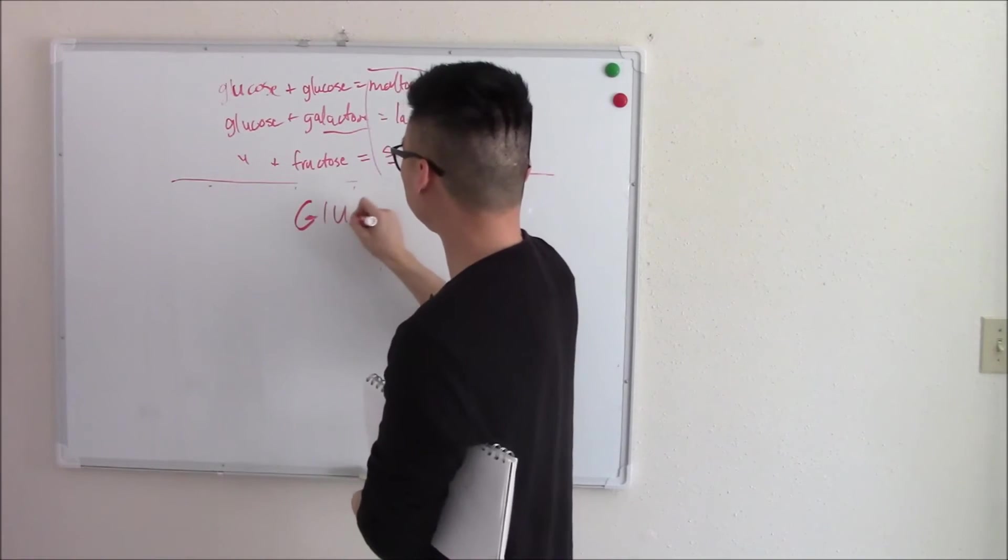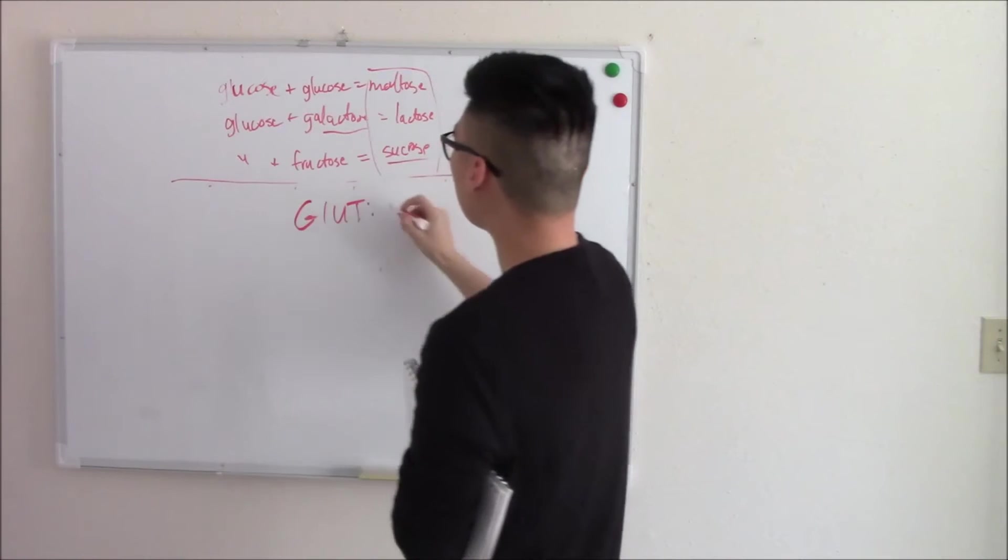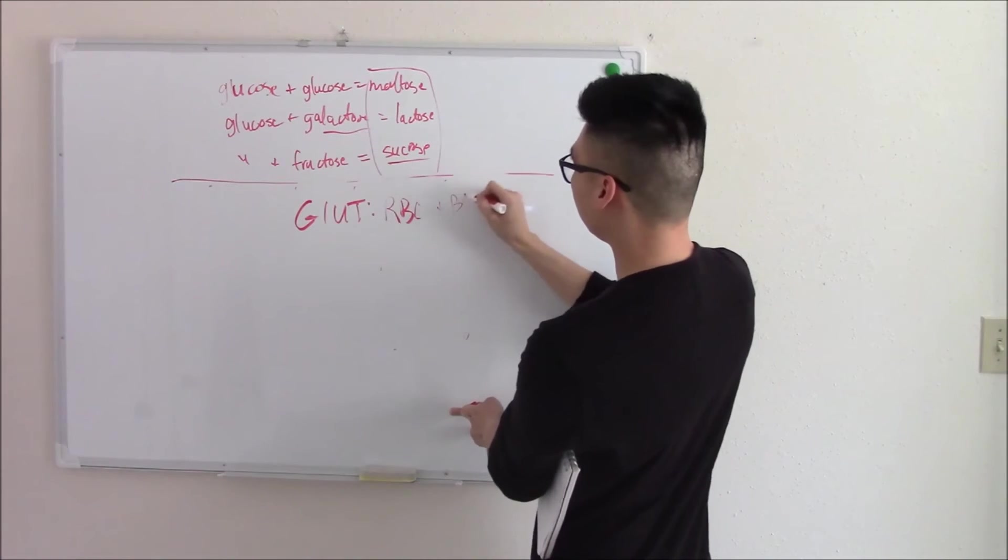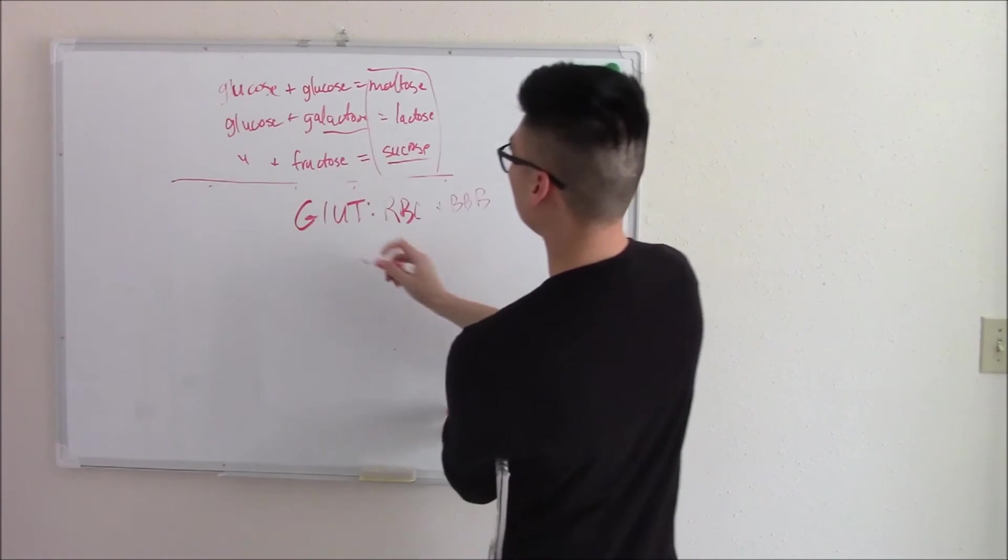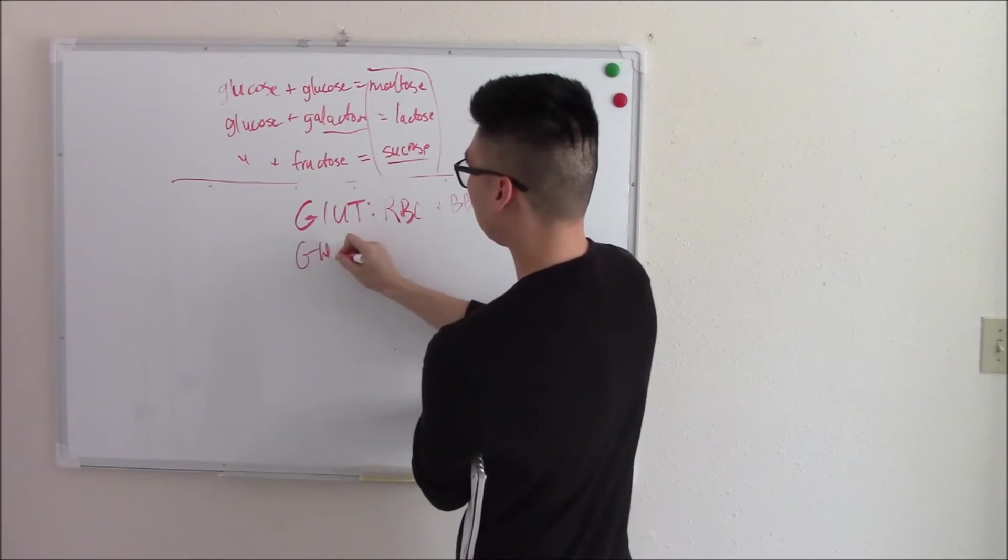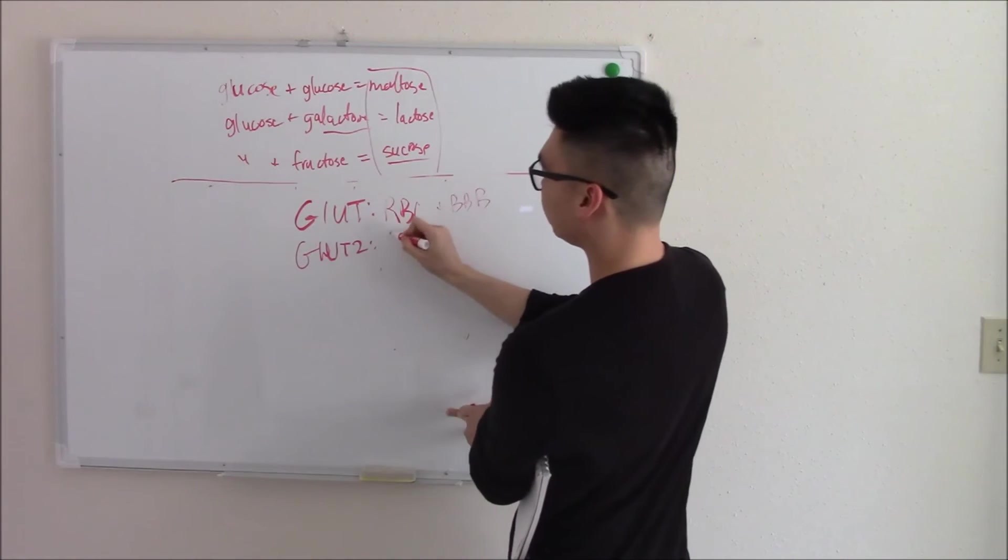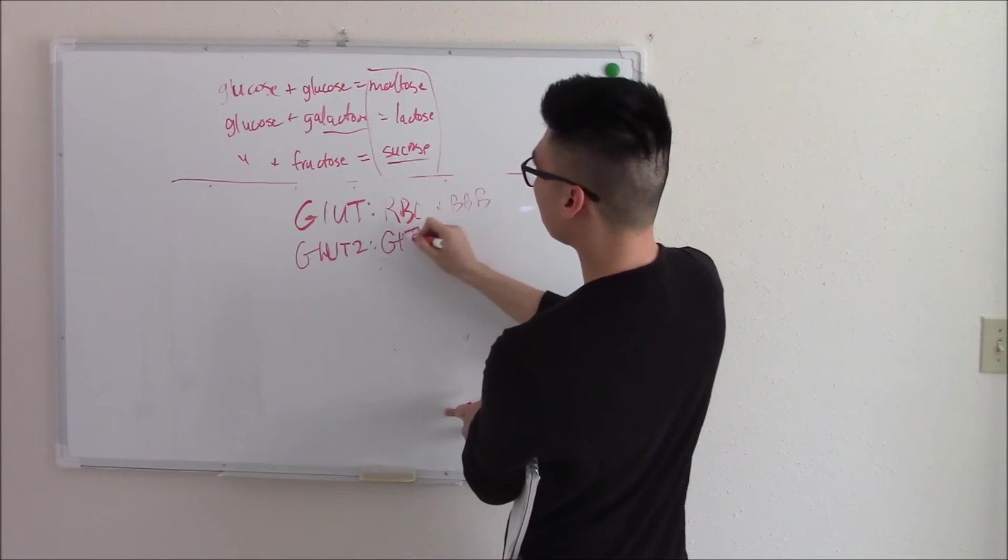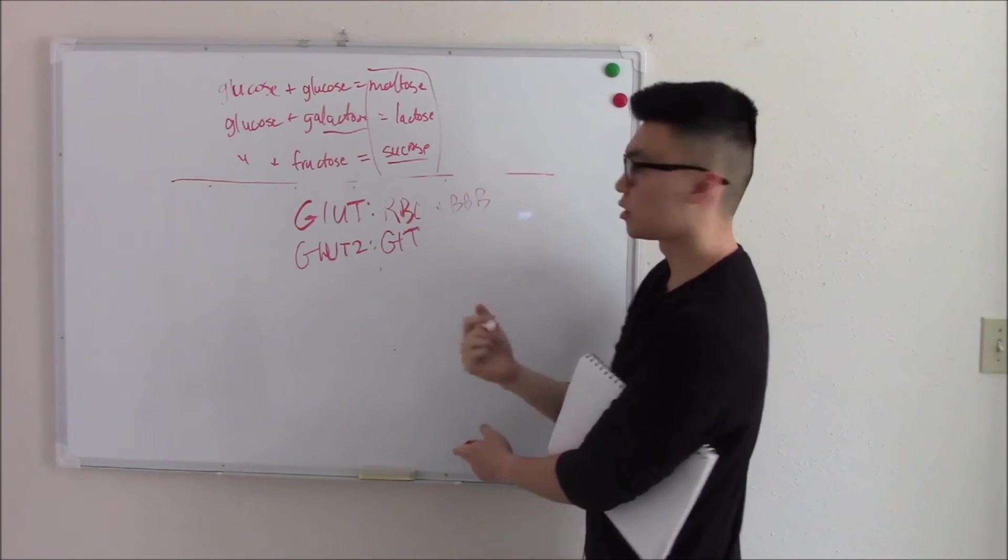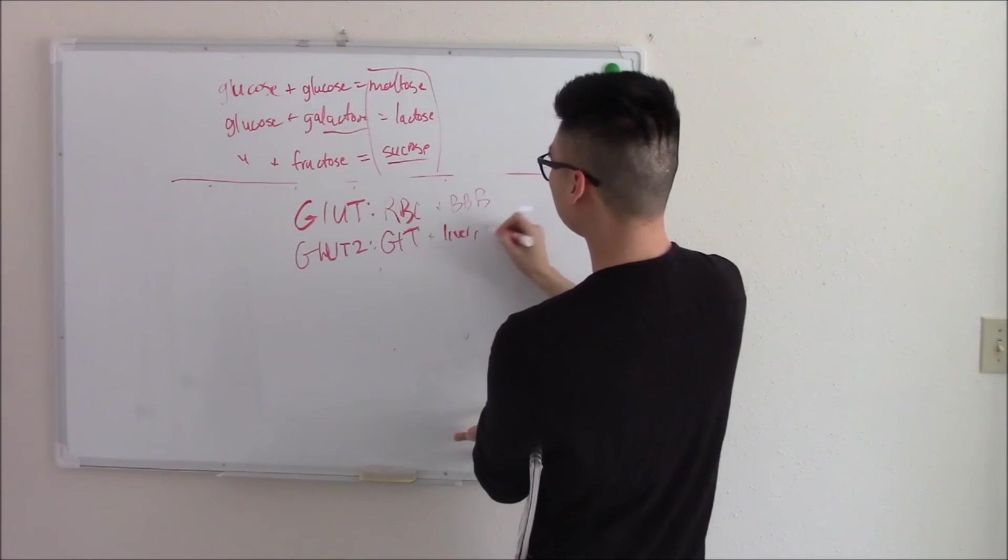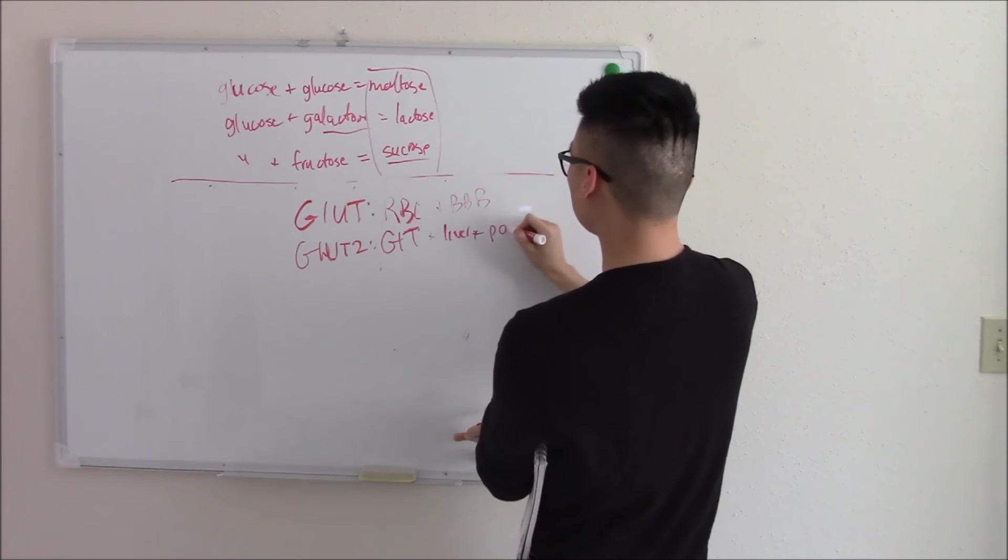GLUT 1. This is found in your RBCs and your blood brain barrier. GLUT 2. This is going to be found in your GIT and also your GIT organs like your liver, your pancreas.